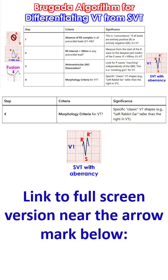There are also several morphology criteria for ventricular tachycardia, which are rather complex. Step 4: The classic VT shape is the left rabbit ear taller than the right in V1. On the contrary, if the left is smaller — as shown in the picture — it is SVT with a bundle branch block. That is the typical pattern.